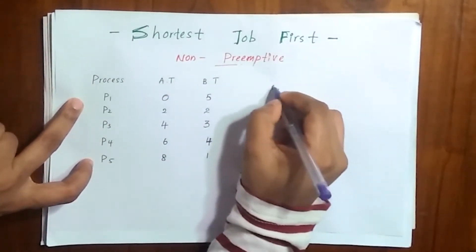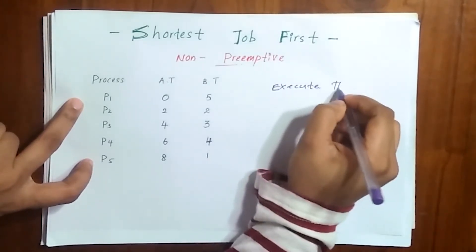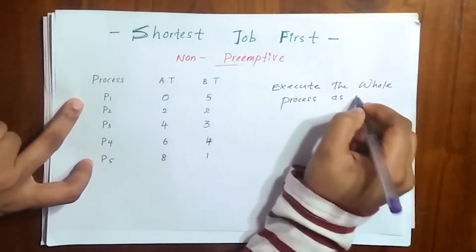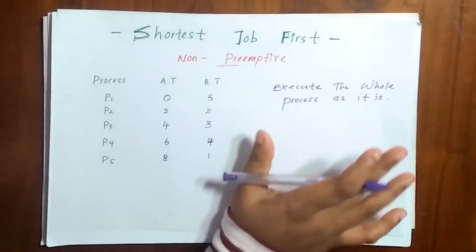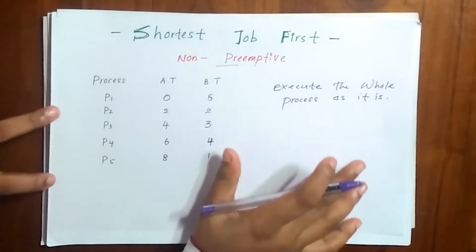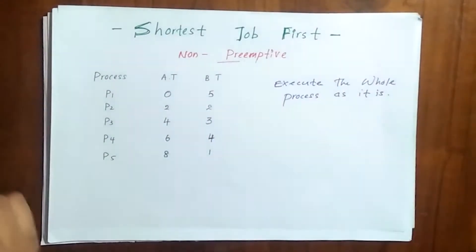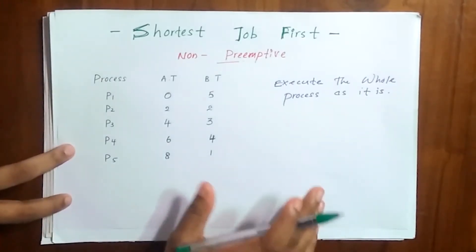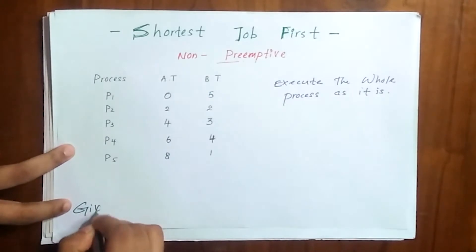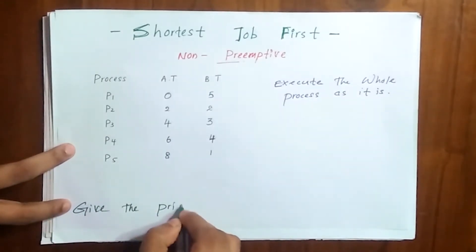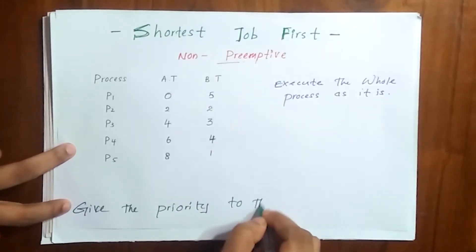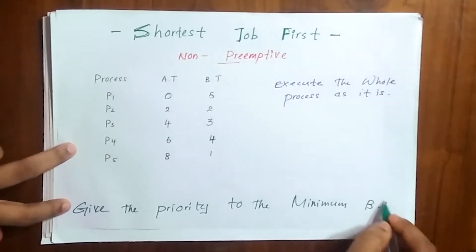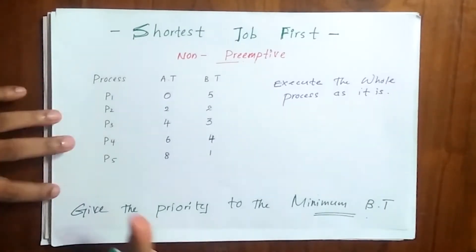Here I said that we do not require remaining time, that means in non-preemptive we execute the whole process as it is. This is what happens in non-preemptive. This is the difference between preemptive and non-preemptive. Now let's see what happens in this non-preemptive Shortest Job First. Here we give the priority to the minimum burst time.